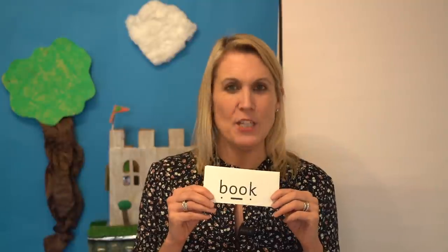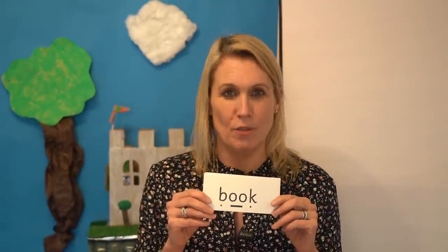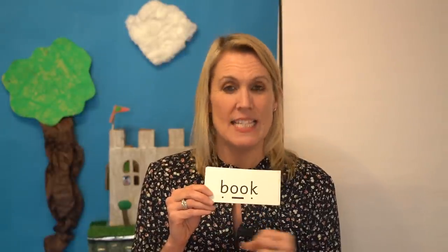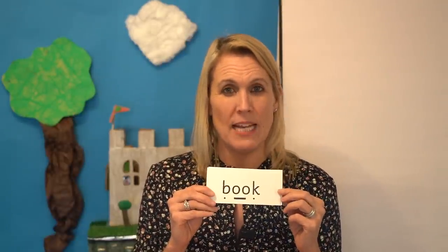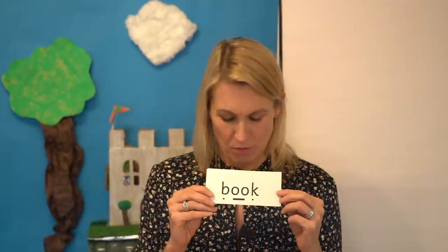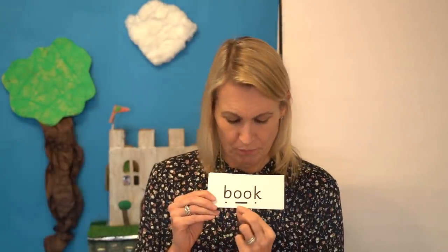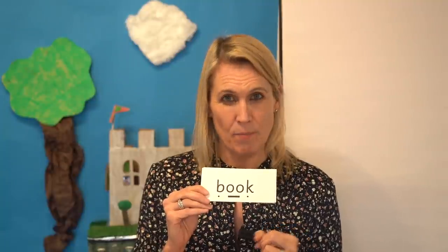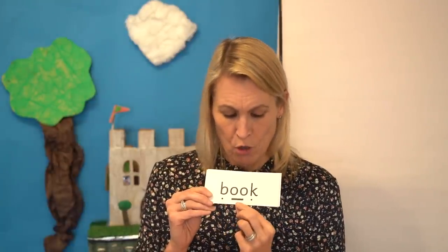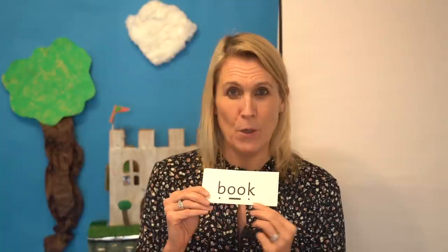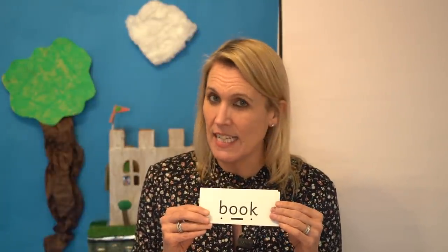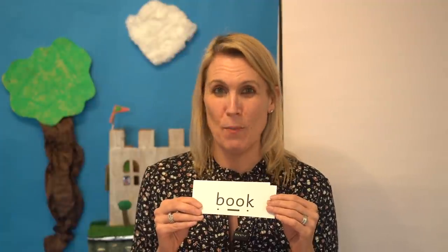Let's read another word. Have a look at this one. Can you see the digraph 'uh'? Yes, here it is. Say the sounds as I point, then blend and read the word. Now let's read the word together: B, uh, K. Book. I am reading a very exciting book. Good job.